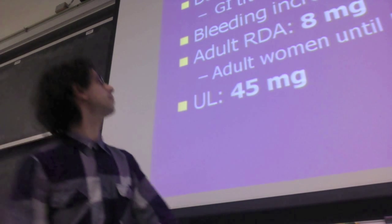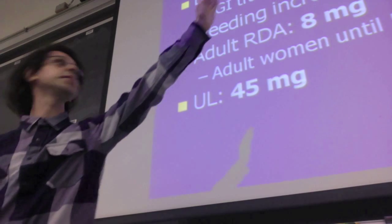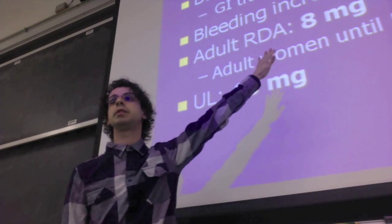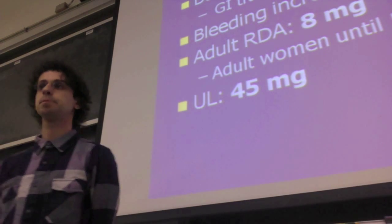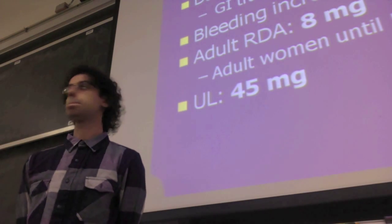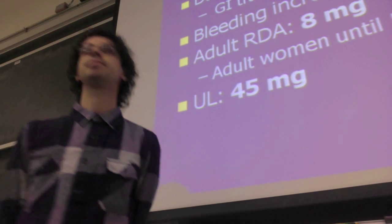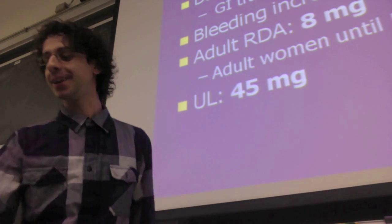Why do we need to eat 8 milligrams per day if we only lose 1.5 milligrams? Because absorption is only partial. As with every mineral, not everything in food actually gets absorbed. Iron absorption is less than 20%, which means if we eat 8 milligrams we absorb about 1.5 milligrams. And again, absorption increases based on body needs — if we need more, we absorb more.